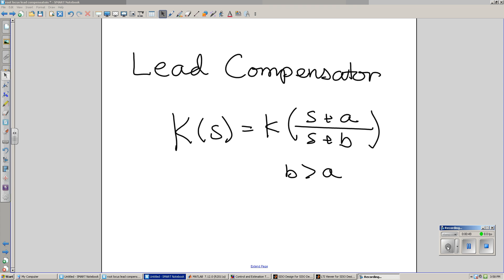The purpose of the zero is to cancel one of your poles, the one that's causing you trouble, and replace it with a faster pole to speed up the system.